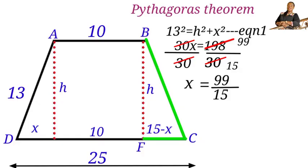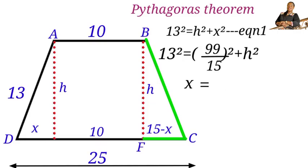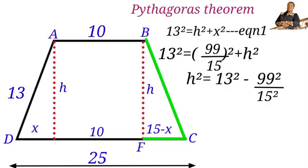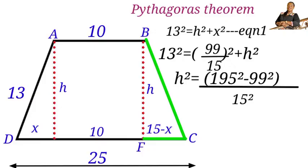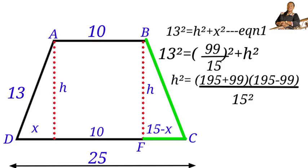Now substitute x = 33/5 into equation 1 to find h. We have 13² = (33/5)² + h², so h² = 13² − (33/5)². This becomes h² = (15² × 13² − 33²) / 15², then h² = (195 + 33)(195 − 33) / 15², using the difference of squares.